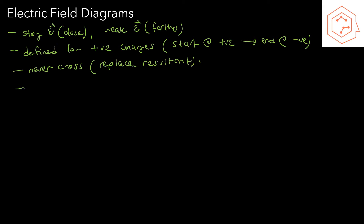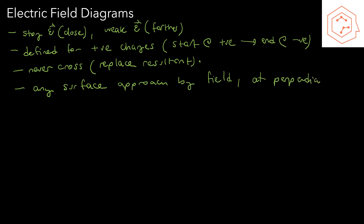The final rule is that any surface approached by field lines is done so at a perpendicular angle. So if you have a flat surface, the field lines going out of or into that surface have to be perpendicular to it. Now let's look at our first example.